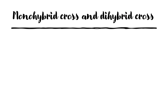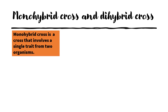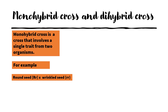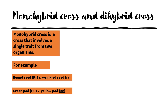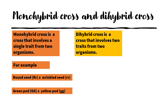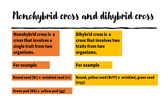Monohybrid cross versus dihybrid cross — what's the difference? A monohybrid cross involves a single trait from two organisms. For example, round seed pollinated with wrinkled seed — one trait each. A dihybrid cross involves two traits from two organisms. For example, round yellow seed pollinated with green wrinkled seed — round and yellow are two traits for the male; wrinkled and green are two traits for the female. So two traits from each organism are being crossed, hence it is called a dihybrid cross.